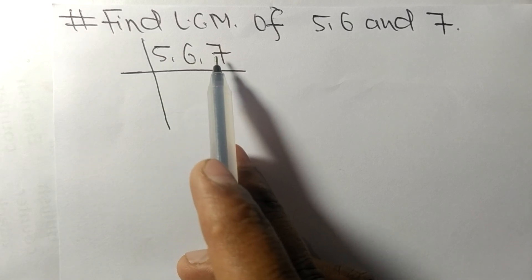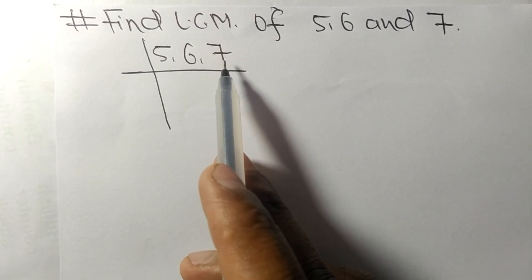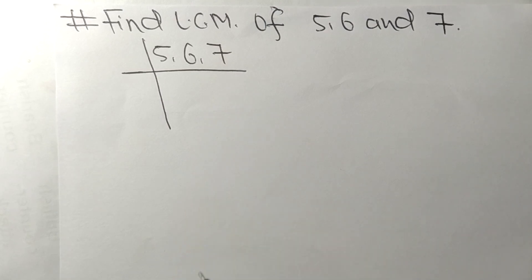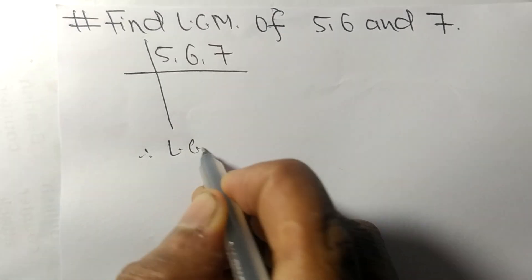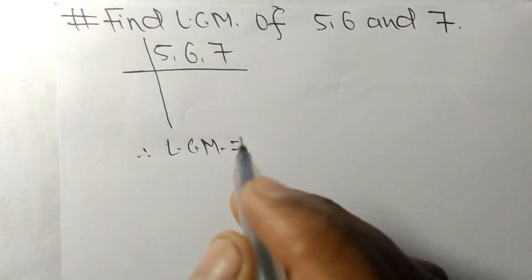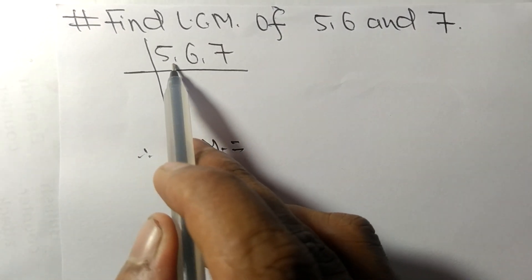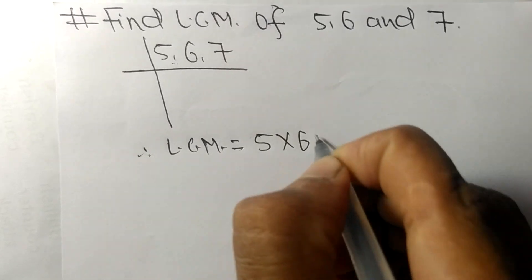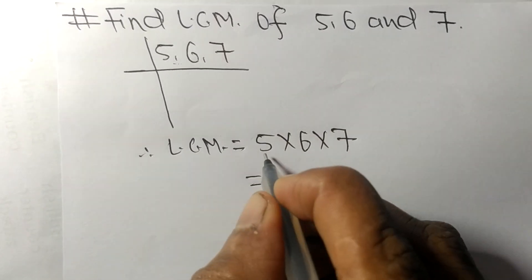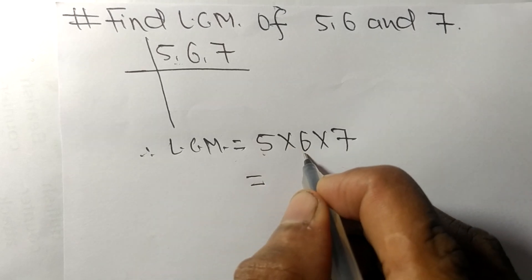5, 6, and 7 are not exactly divisible by the same number. So in that condition we can write LCM is equal to the product of all these numbers, that is 5 times 6 times 7. So 5 times 6 means 30.